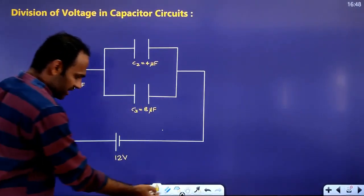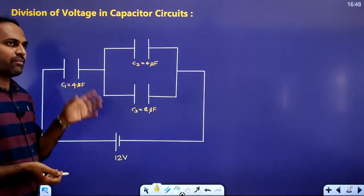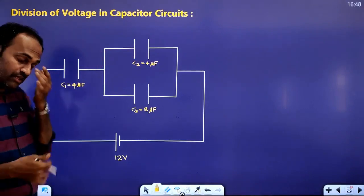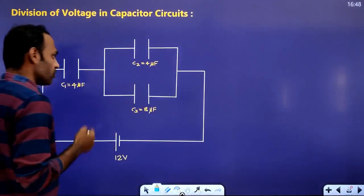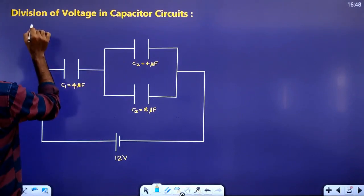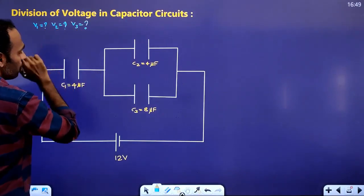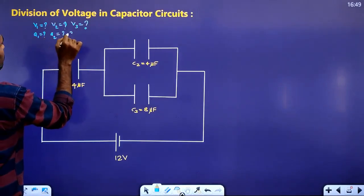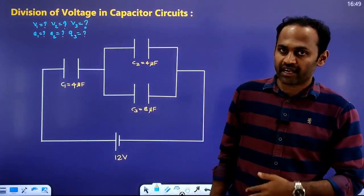Now we will start with the simplest circuit. I will start with a very simple circuit. This method applies to complex circuits, but now we will start with a basic circuit. We want to find out the voltage across the first capacitor, the voltage across the second capacitor, as well as the voltage across the third capacitor — and the charge across all three capacitors.